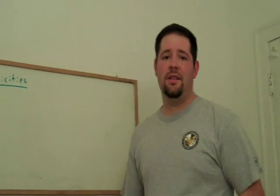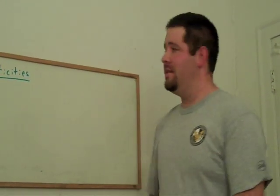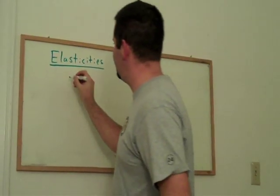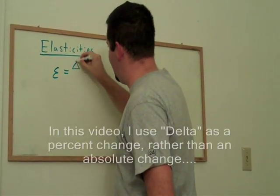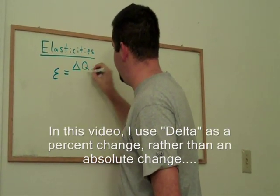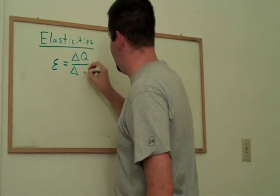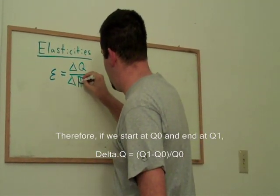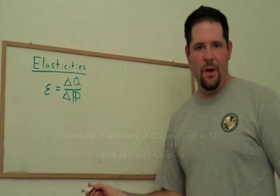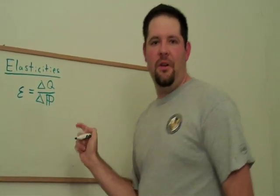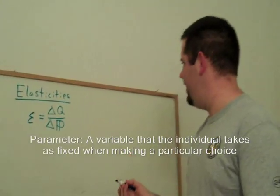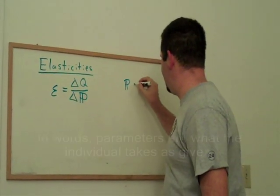So, what is an elasticity? Well, first of all, let's go ahead and start with a formula for an elasticity. An elasticity is a percent change in quantity over a percent change in parameter. Now, I'm using this funky key to indicate that we can think about different parameters, and these parameters can be different things.